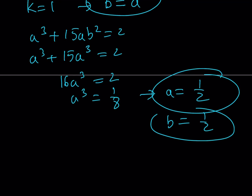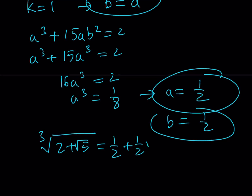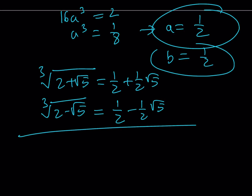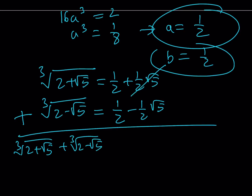Let's put it together. We assumed the cube root of (2 + √5) can be written as a + b√5, so it equals 1/2 + (1/2)√5. By the binomial theorem, the cube root of the conjugate is also the conjugate of the answer, so it's 1/2 − (1/2)√5. When you add these two together — which is what we were looking for — that gives 1/2 + 1/2, which equals 1.